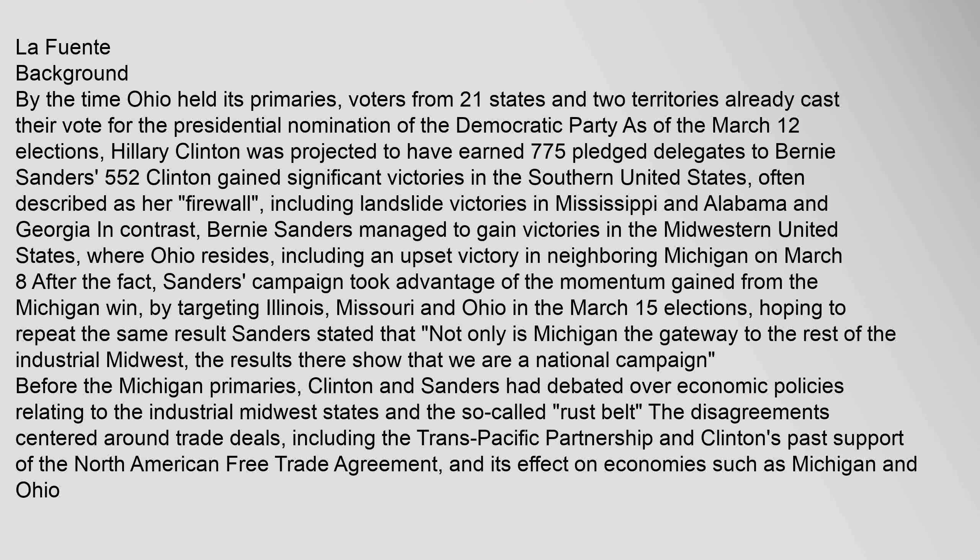Democratic Primary Background: By the time Ohio held its primaries, voters from 21 states and two territories had already cast their votes for the presidential nomination of the Democratic Party. As of the March 12 elections, Hillary Clinton was projected to have earned 775 pledged delegates to Bernie Sanders' 552. Clinton gained significant victories in the southern United States, often described as her 'firewall,' including landslide victories in Mississippi, Alabama, and Georgia.